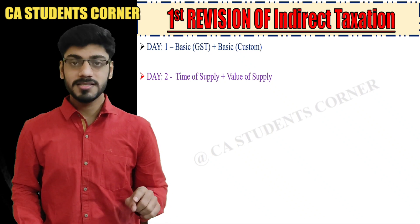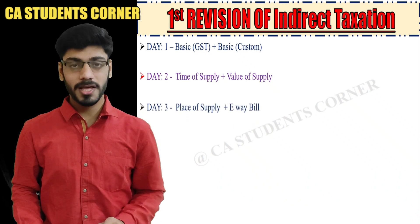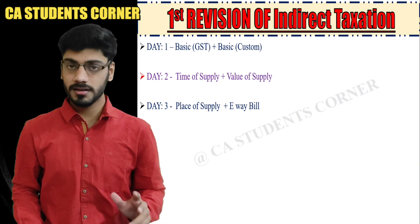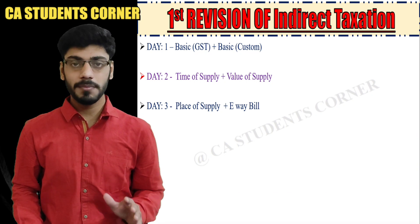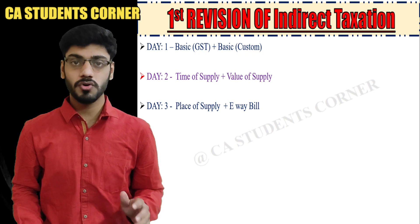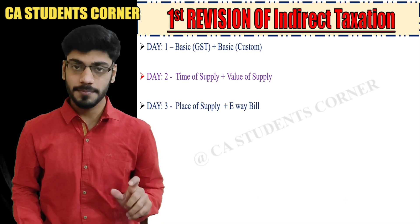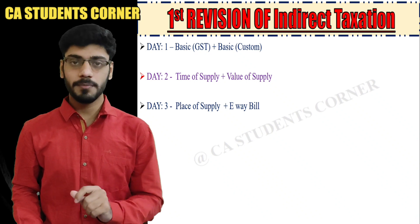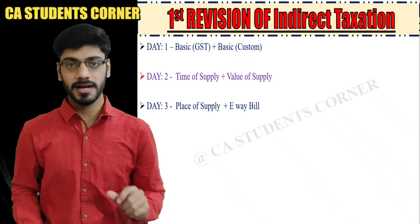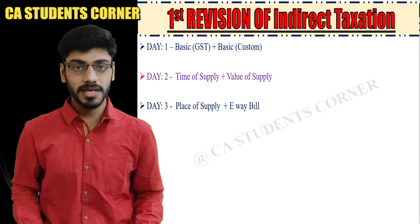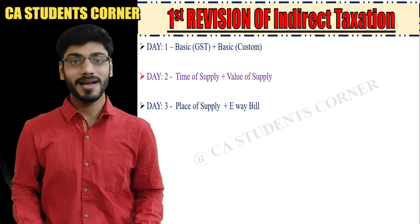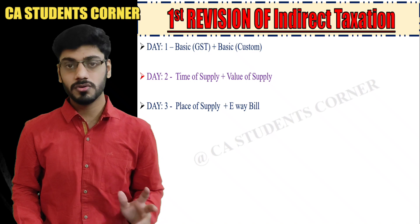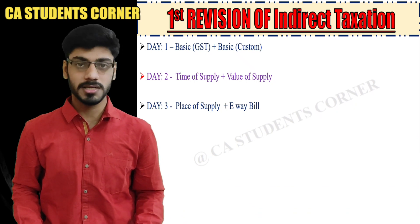On day 3, the chapter is Place of Supply and e-Way Bill. I have not covered Place of Supply with you, so if you want to revise it, you will have to read it from your faculty's notes. e-Way Bill is a small topic — you should know the basics: the issue of e-Way Bill, the time period, the criteria, which form is used to fill it and which form is used to receive it.